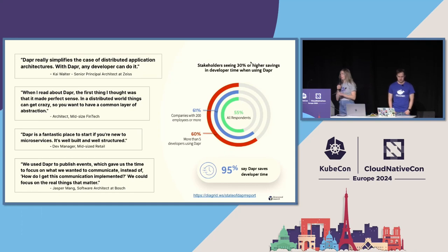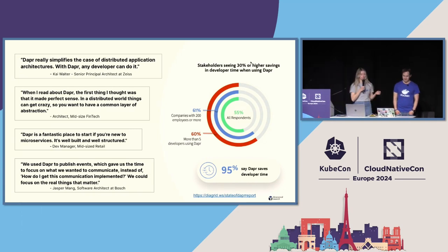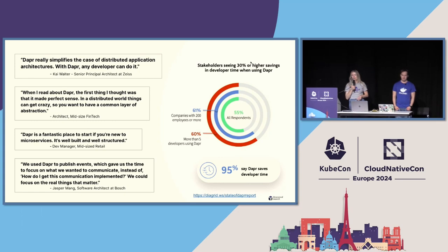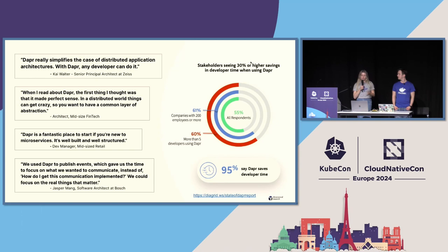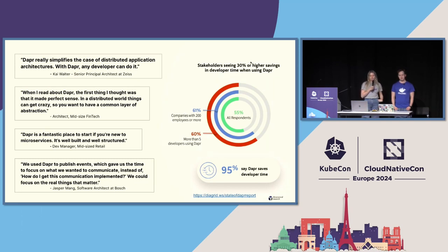As Oleg mentioned, how do we enable developer productivity? Developer time equals money. We did a survey of over 150 developers and found that 95% of Dapr users told us that Dapr saves developer time. This was a huge number of people from large enterprises all the way down to small and medium businesses across different industry verticals — fintechs, mid-sized retail companies. Stakeholders reported that around 30% or higher of developer time was saved by enabling Dapr within your code.